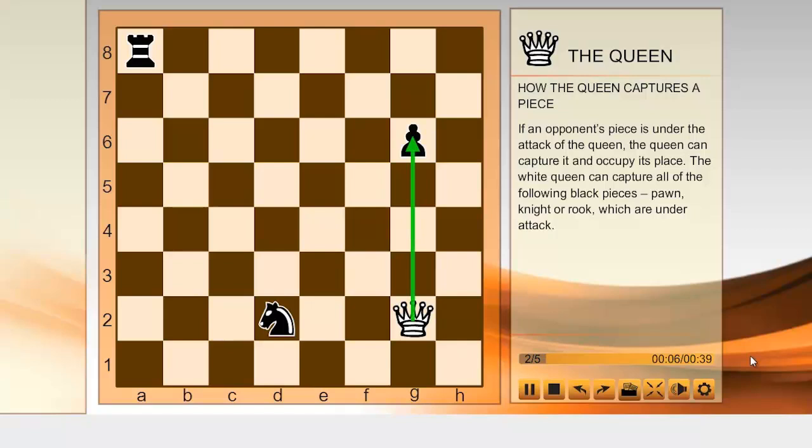If an opponent's piece is under the attack of the queen, the queen can capture it and occupy its place. The white queen can capture all of the following black pieces: pawn, knight, or rook, which are under attack.